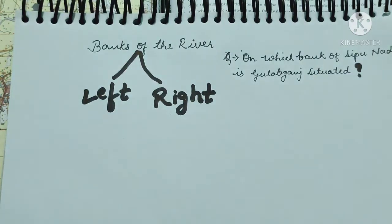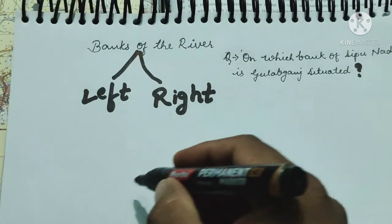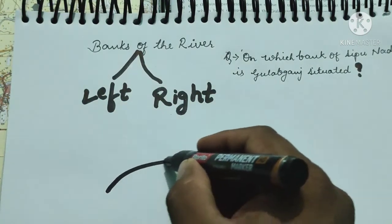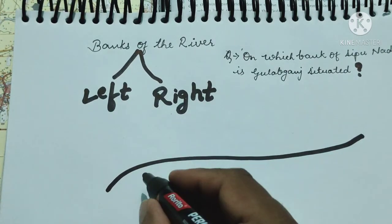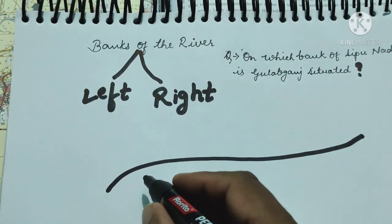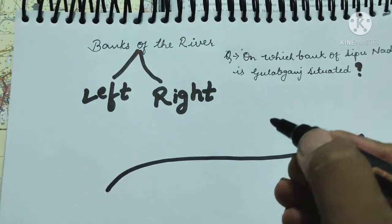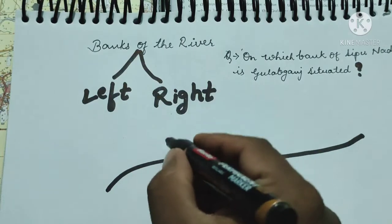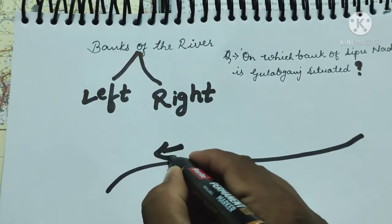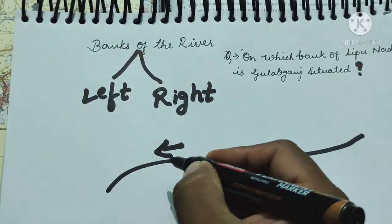Now the question is how to determine which one is left and which one is right. First of all, understand that this is the river. If you have watched the direction of flow of river video, first judge the direction from the river's current. Sometimes there are arrow marks on the river — this is the arrow mark which you see on the river.